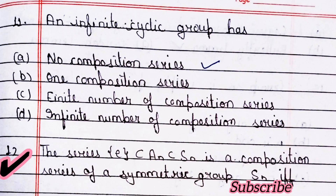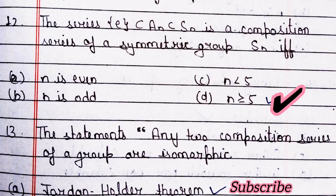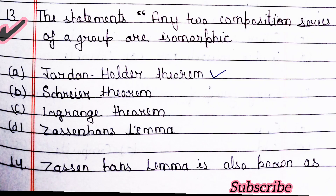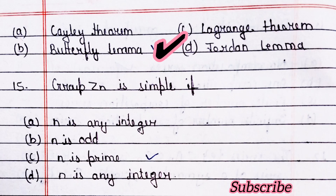The series is a composition series of symmetric group Sn if n is greater than or equal to 5 — option D is right. Question thirteen: the statement 'any two composition series of a group are isomorphic' — option A is correct. Next question: Zassenhaus lemma is also known as — option B is correct, butterfly lemma.